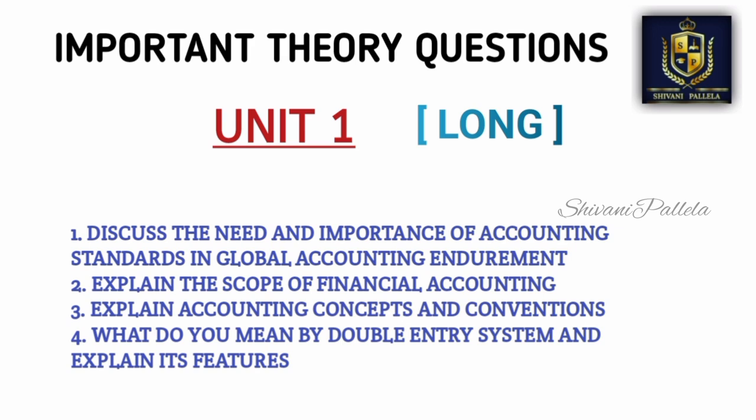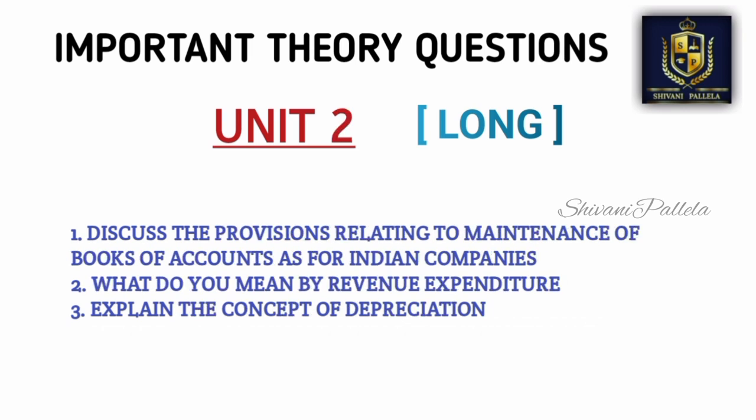From Unit 5 you have 3 problematic methods, and 2 questions will appear in long — either theory or problematic. CVP analysis topics include BEP (breakeven point) and PV ratio. Material and labor may be given as a choice, so focus on learning CVP analysis.